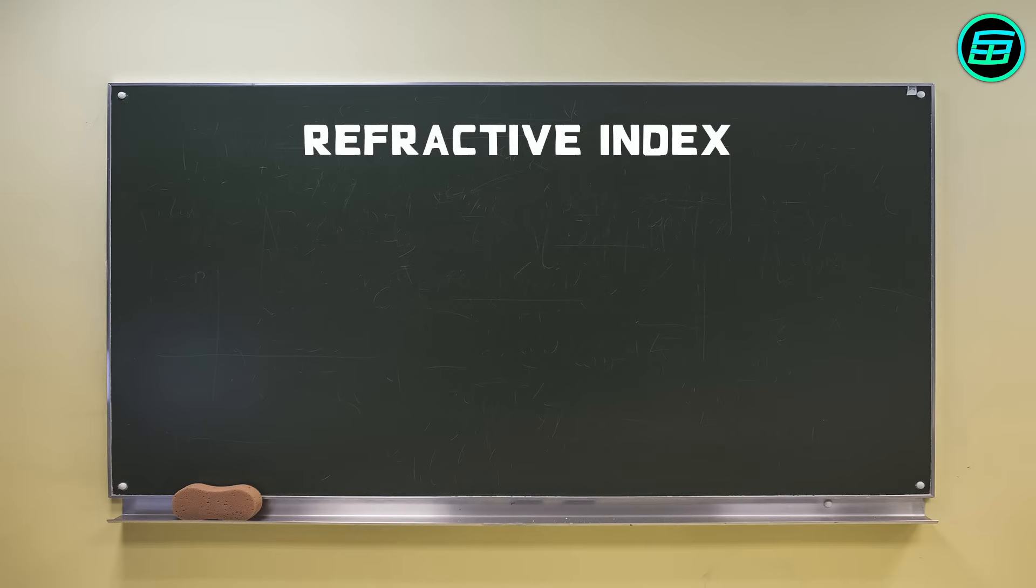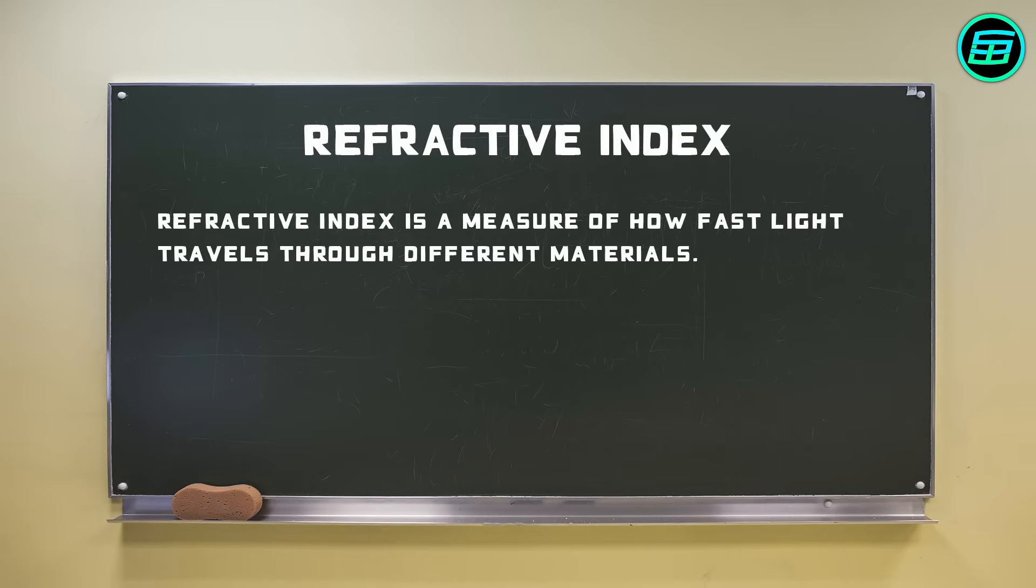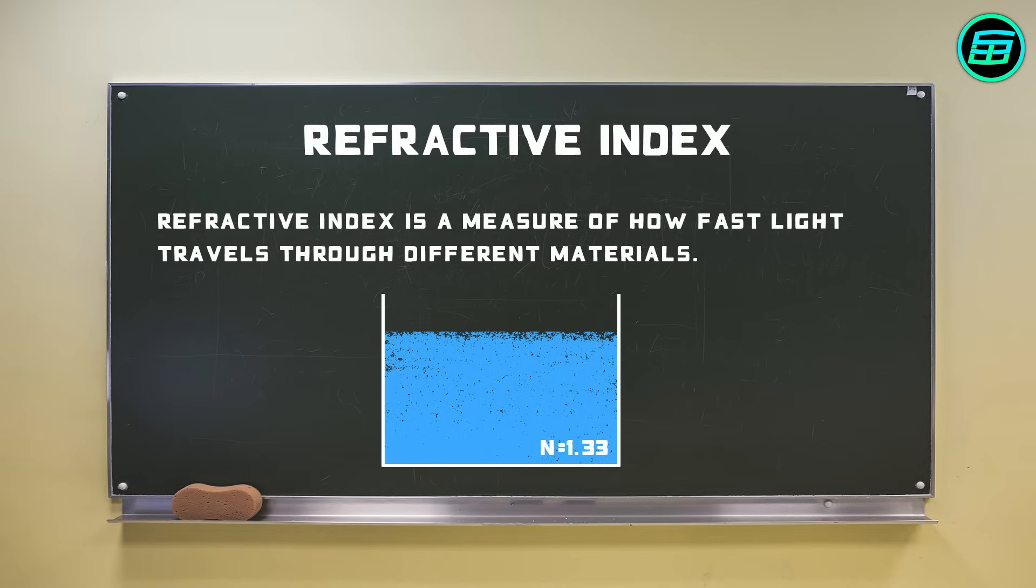Refractive index is a measure of how fast light travels through different materials. For example, at 20 degrees Celsius, the refractive index of water is about 1.33. This means that light travels 1.33 times more slowly in water than it does in a vacuum.